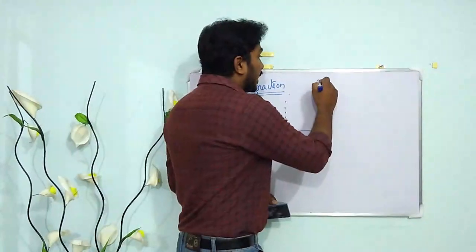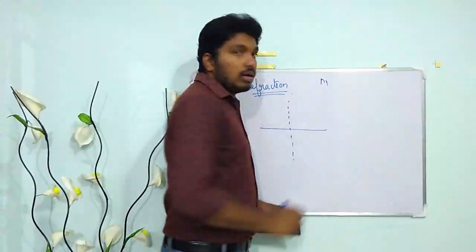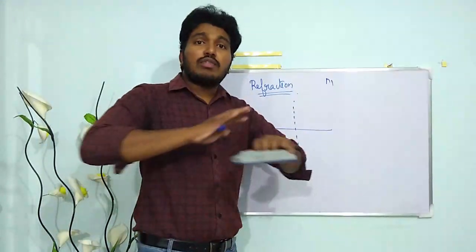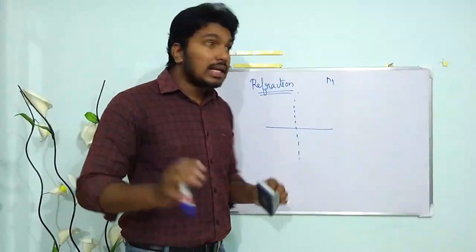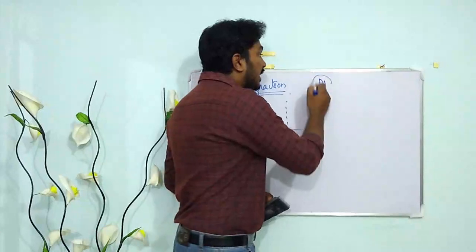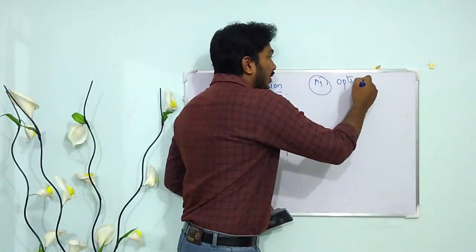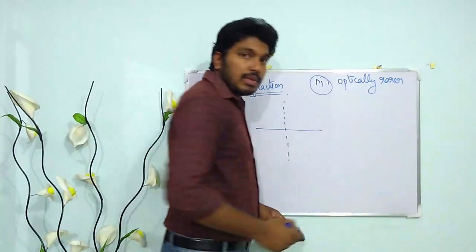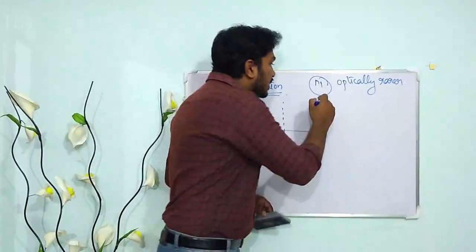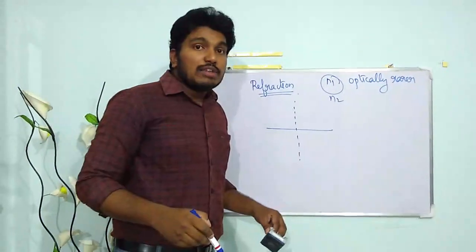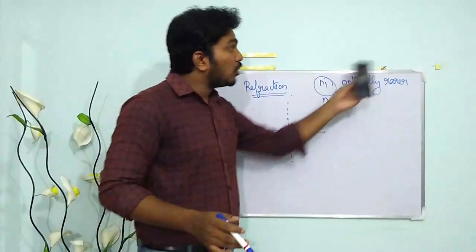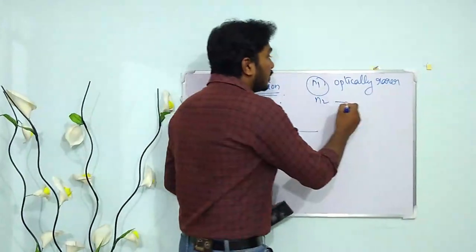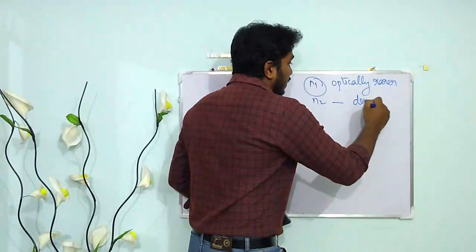Suppose in a particular medium n1 the speed of light is very large. If the speed of light in a medium is very large, we say that medium is optically rarer. In another medium, if the speed of light is smaller compared to the previous medium, we say that medium is optically denser.